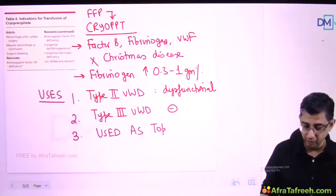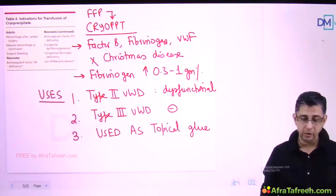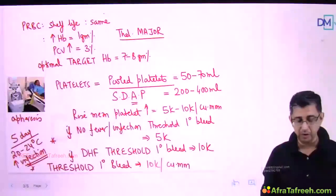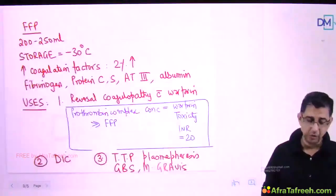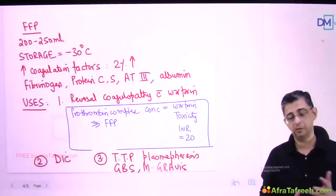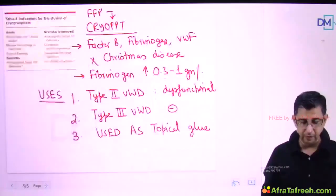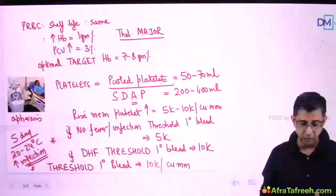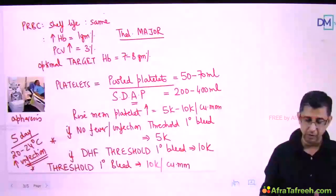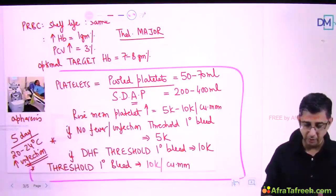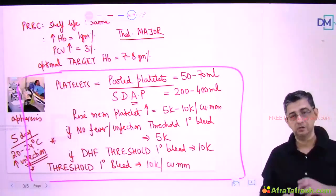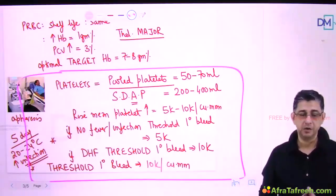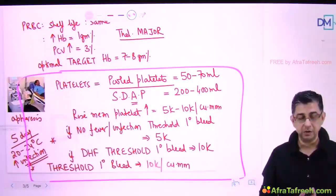A third important usage is that cryoprecipitate can be used as a topical glue to help achieve hemostasis. To summarize the uses of various blood components: packed RBCs are primary, whole blood is used for volume replacement in bleeding, then fresh frozen plasma, cryoprecipitate, and platelets. Out of all of these, I especially want you to pay attention to the platelets section, as exam questions frequently ask about platelet usage.